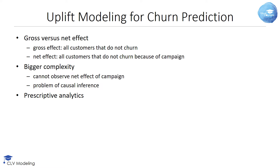In uplift modeling, one makes a distinction between cross and net effect. Cross effect represents all the customers that do not churn. However, it could be that some of these non-churners were not intending to churn anyway and didn't need the campaign to stay. Net effect represents the customers that do not churn because of the campaign-specific effect.